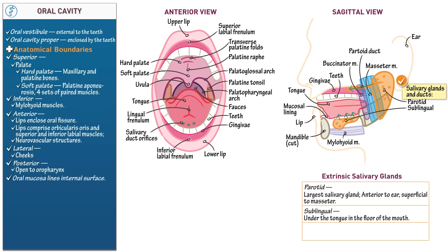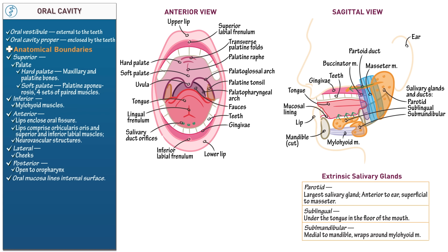'Sublingual' refers to the gland's location below the tongue. The submandibular gland, which is roughly the size of a walnut, lies along the medial side of the mandible and wraps around the mylohyoid muscle. Its duct also drains into the floor of the mouth.